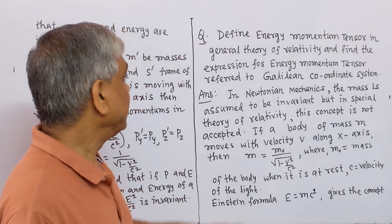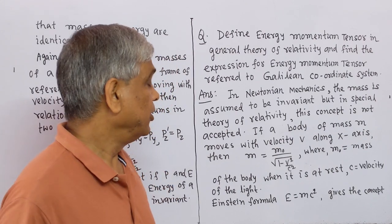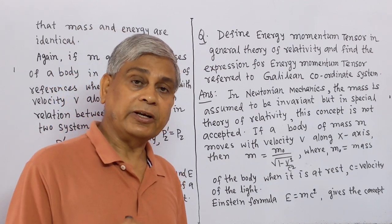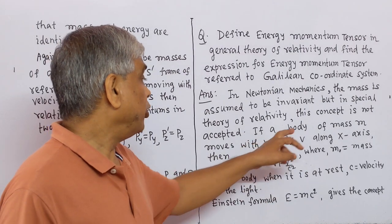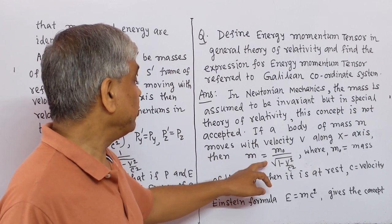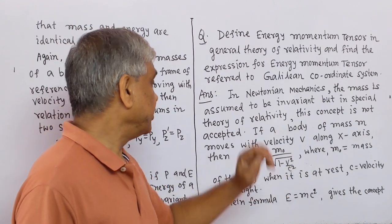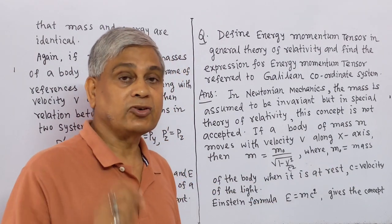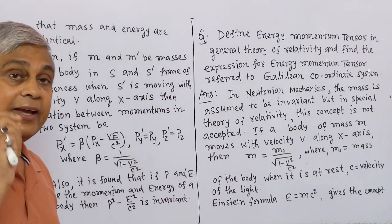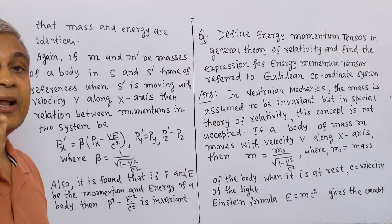Since we know that in Newtonian mechanics, mass is assumed to be invariant — that is, mass is constant. But in Special Theory of Relativity, this concept is not accepted. In Special Theory of Relativity, if a body of mass M moves with velocity V along the X-axis, then M equals M₀ divided by the square root of (1 minus V²/C²), where M₀ is the rest mass and C is the velocity of light. Einstein's formula E = MC² gives the concept that mass and energy are identical.